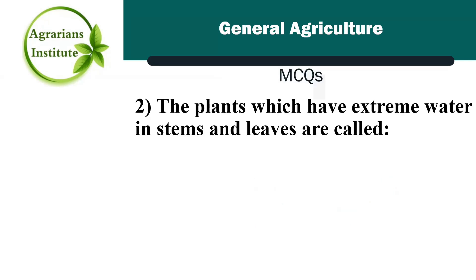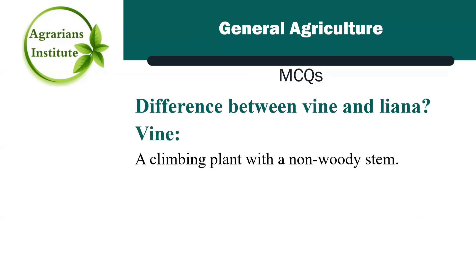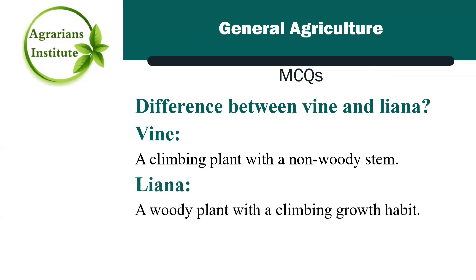Next MCQ: plants which have extreme water in stems and leaves are called — Option A is vine, Option B is liana, Option C is succulent, and Option D is none of these. The correct answer is C, succulent. You should also know the difference between vine and liana: a vine is a climbing plant with a non-woody stem, while a liana has a climbing growth habit.